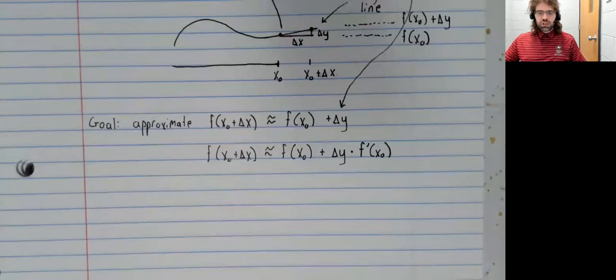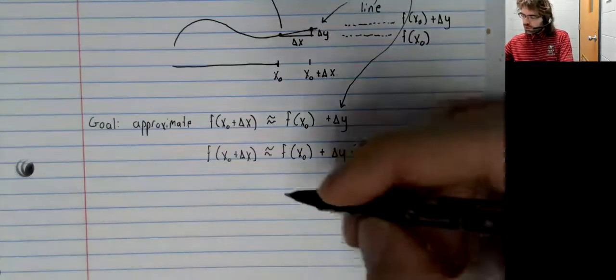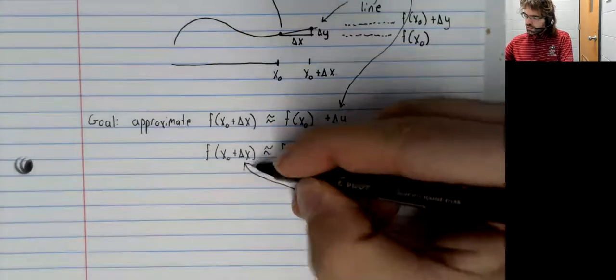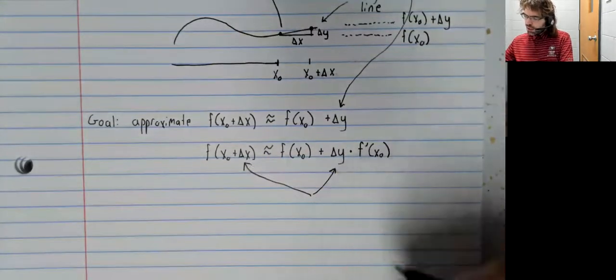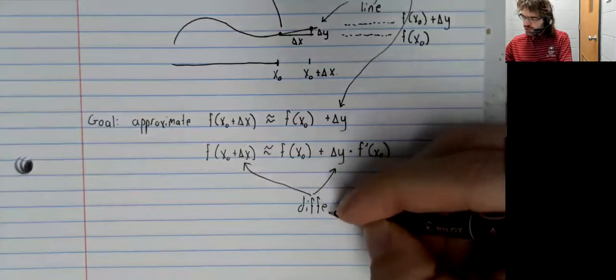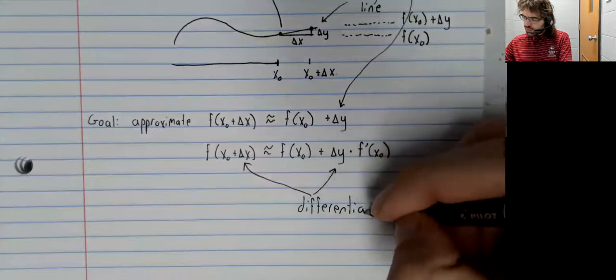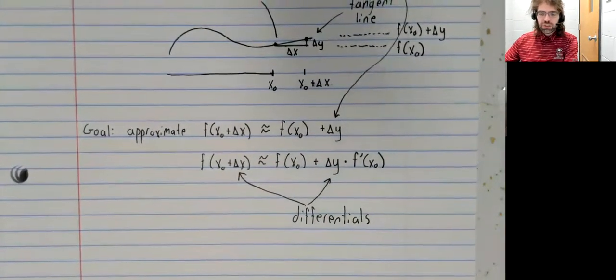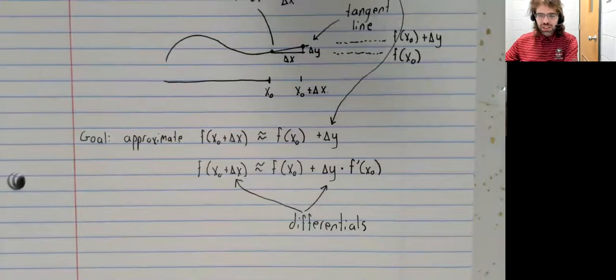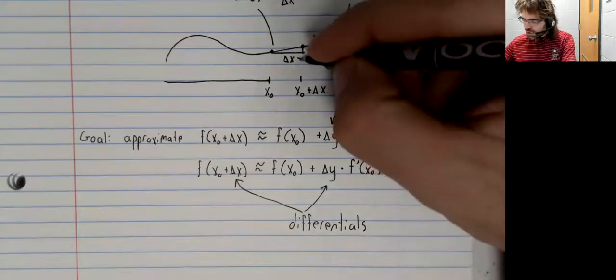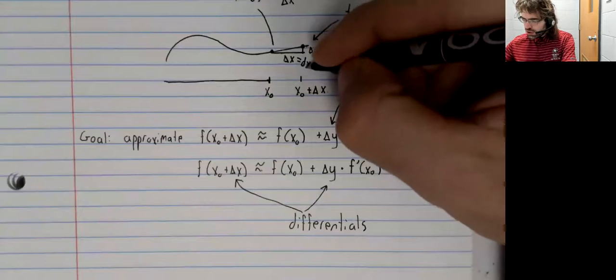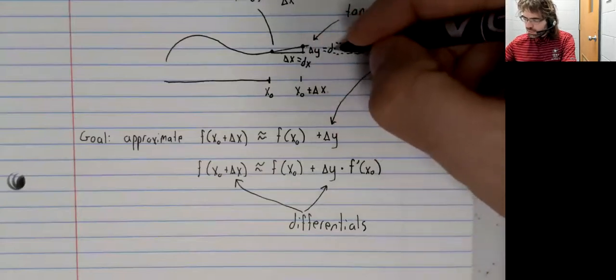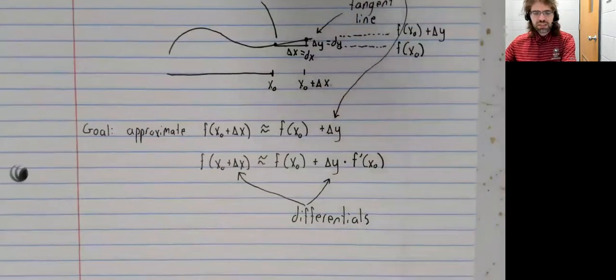And these deltas get their own names. Delta x and delta y are called differentials. And I just realized that in my written notes, I used slightly different notation. So let me make sure that doesn't cause any confusion. In my written notes, instead of delta x and delta y, I use dx and dy.